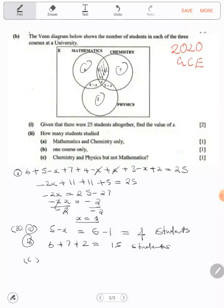Now chemistry and physics but not mathematics. So we're saying chemistry and physics, but not mathematics, so we're removing mathematics.